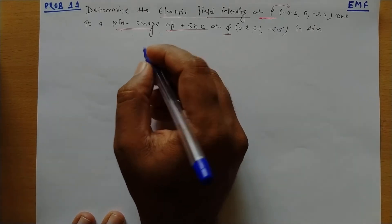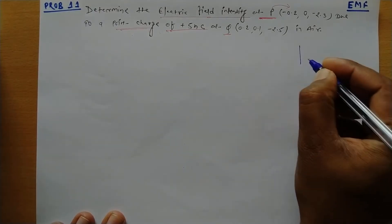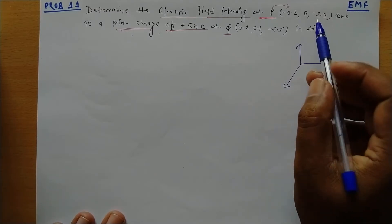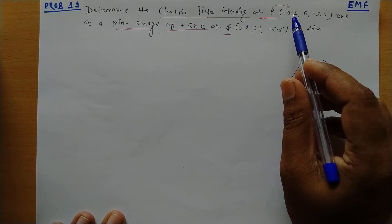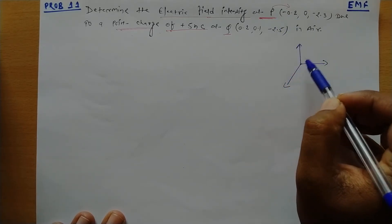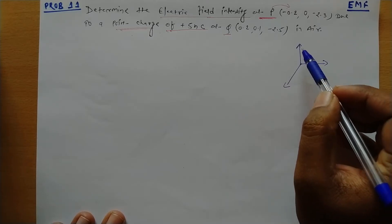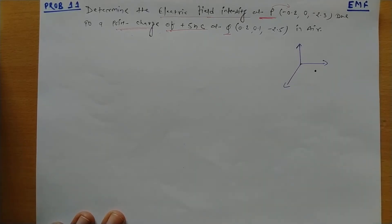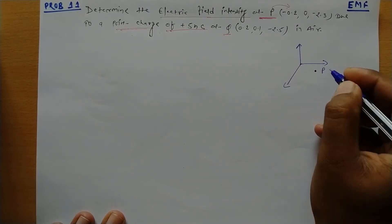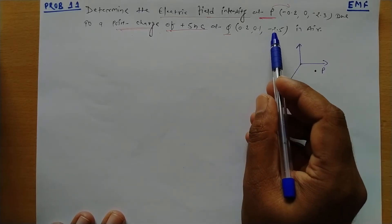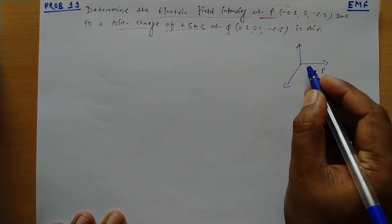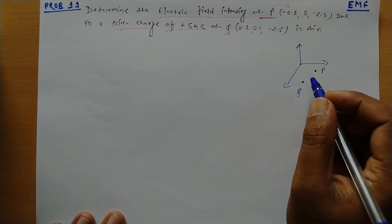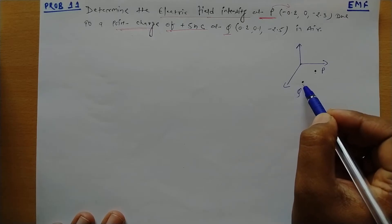So now, if we define the Cartesian coordinate system here and define the electric field, point P has coordinates X = -0.2, Y = 0, Z = -2.3, so we place it somewhere here. Point Q is at (0.2, 0.1, -2.5), so we place Q somewhere here. We need to find the electric field intensity at point P due to point Q.